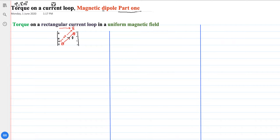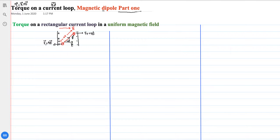The electric dipole moment is represented by p, and its direction is from negative to positive. The dipole is placed at some angle, so the dipole moment makes an angle theta with the electric field. The force on the negative charge is equal to qE, and the force on the positive charge is also equal to qE.